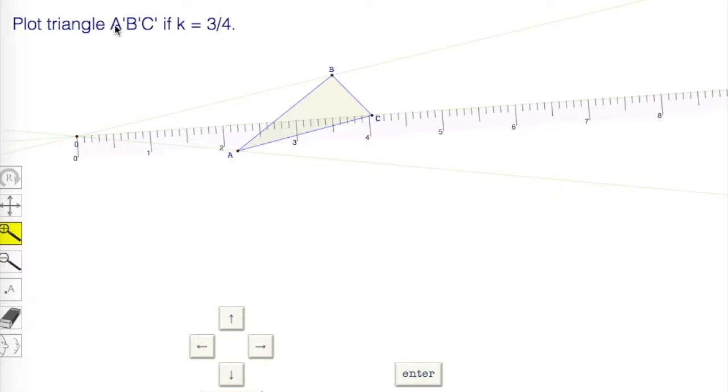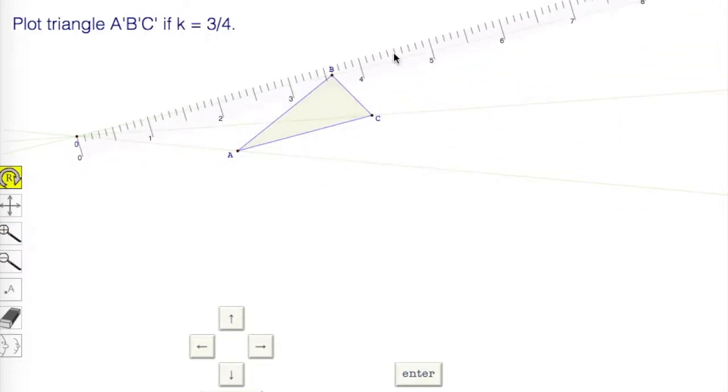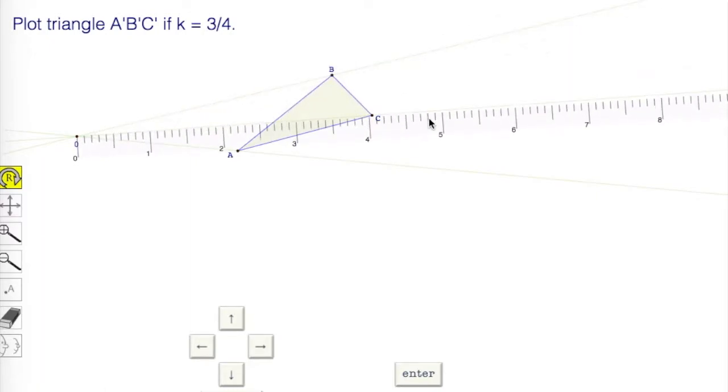Here's a level 4 type question. Plot triangle A prime, B prime, C prime if K is 3 quarters. Take my ruler and I'm going to rotate it through a point. Let's say I usually pick the point that's furthest away.